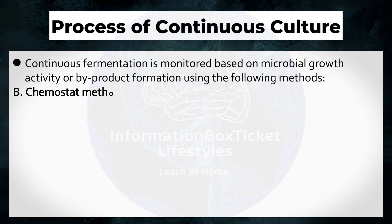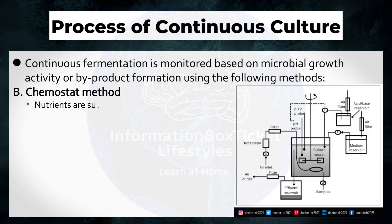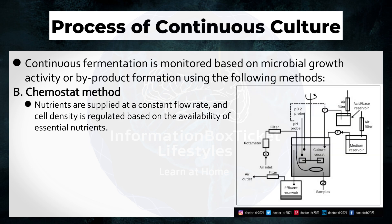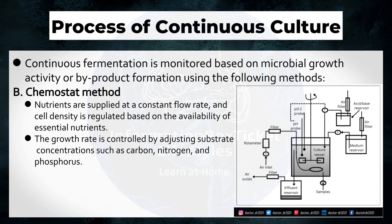Chemostat Method: Nutrients are supplied at a constant flow rate, and cell density is regulated based on the availability of essential nutrients. The growth rate is controlled by adjusting substrate concentrations, such as carbon, nitrogen, and phosphorus.